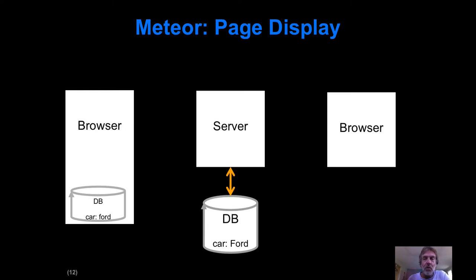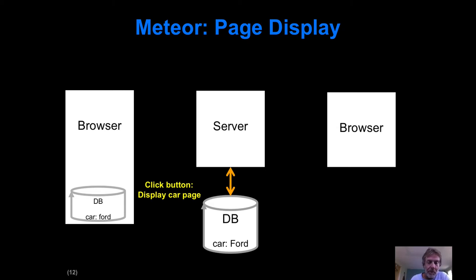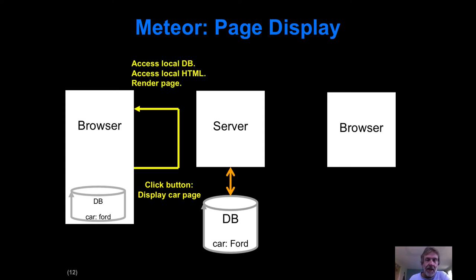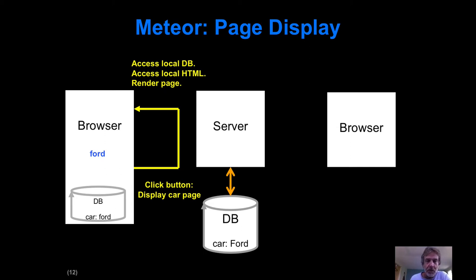After initialization, let's see what happens when navigating around this new kind of site. Say we've clicked a button in the nav bar that says we want the page that displays the current car. Before, that would have resulted in a GET request to the server to build the HTML. Now with Meteor, we're not even going to interact with the server for that. Instead, we'll access the local database, access our local copy of the HTML, and just render the page — no actual server interaction required.